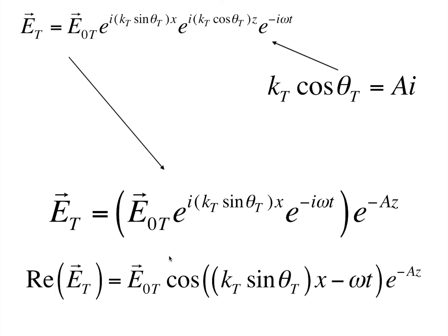So, this expression shows that the electric field is oscillating continuously with respect to time and position with respect to x and the amplitude of this is decaying exponentially with respect to the z vector.